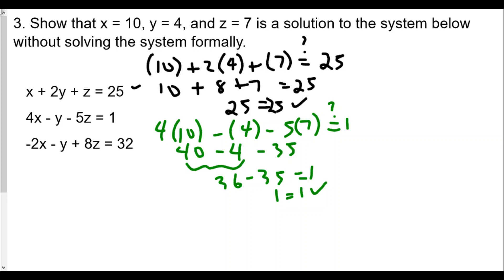For the last equation — you might say, 'I got the first two correct, it must be true for all of them.' That's not true. You have to check all the equations with all the values. We call this a check because we're not solving anything; everything's been solved for — we're just making sure everything is balanced.